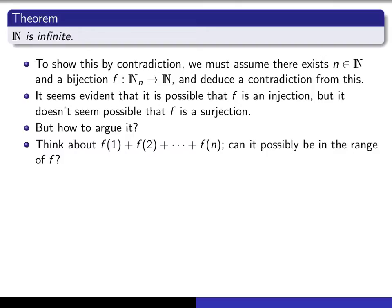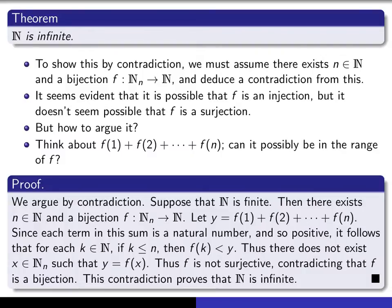Let's now write down the details. We argue by contradiction. Suppose that ℕ is finite. Then there exists a natural number n and a bijection f from ℕₙ into ℕ. Now we let y be this particular number, f(1) + f(2) + ... + f(n), and we're going to argue that it's impossible for that to be in the range of f.